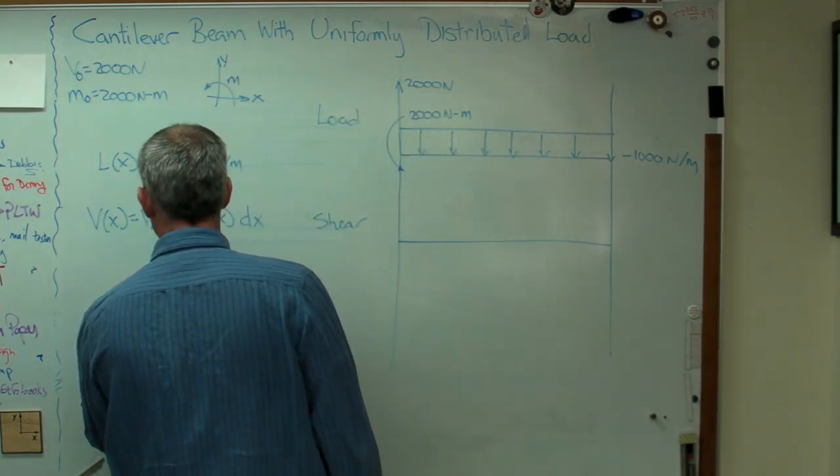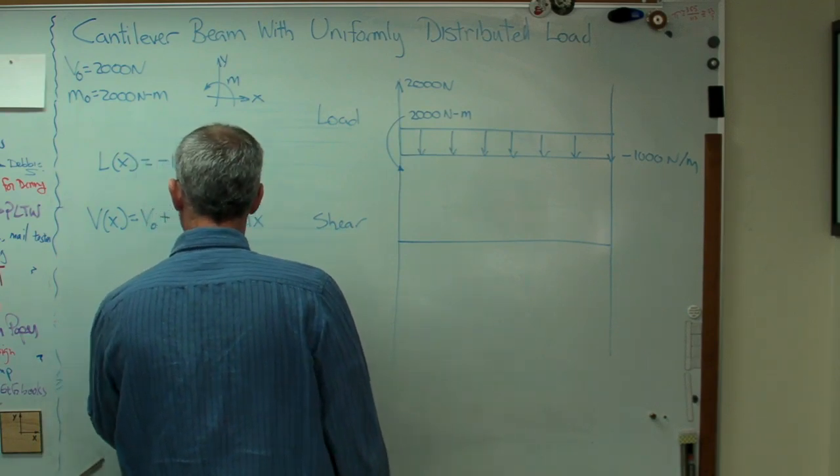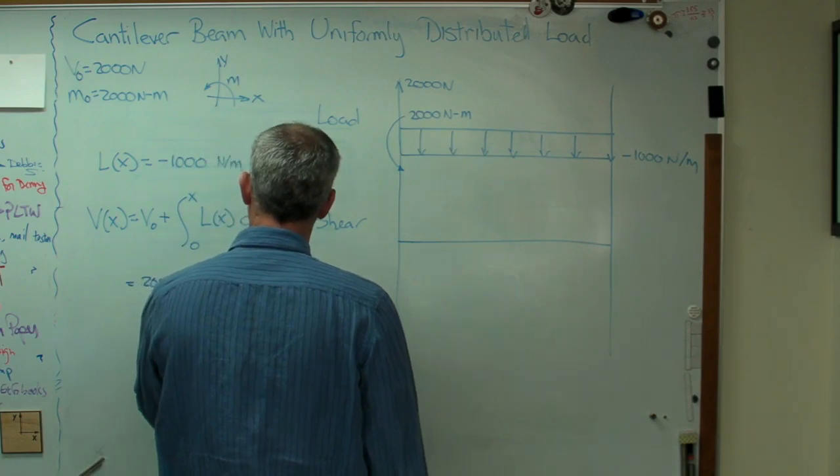All right. So, this is going to be, what did we decide? That was 2,000, plus the integral 0 to x of minus 1,000 dx.